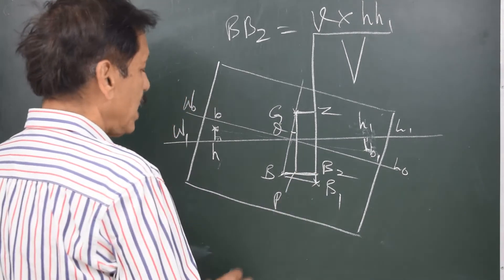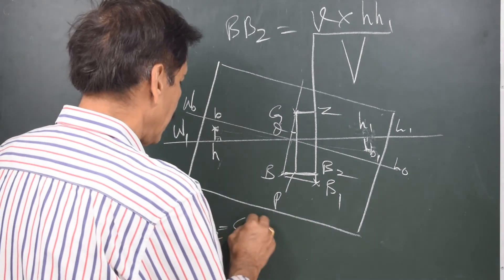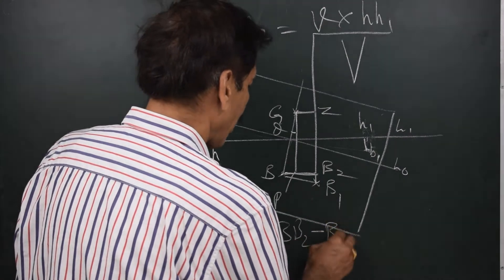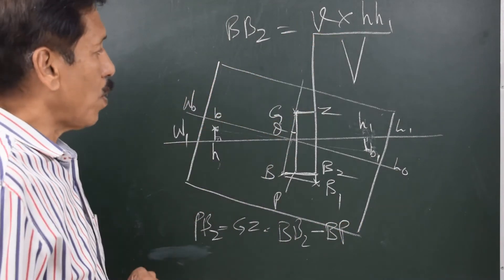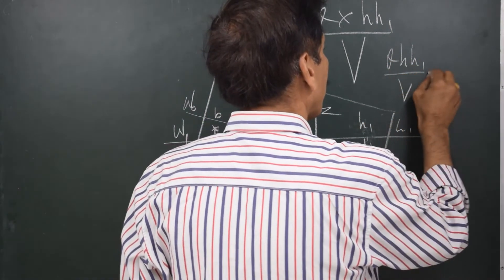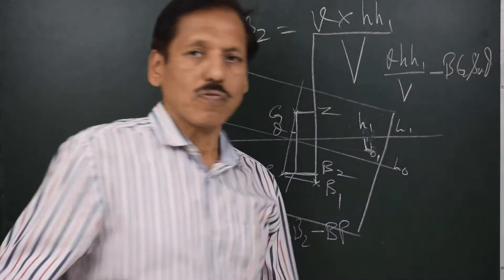PB2 being GZ, PB2 being GZ is equal to BB2 minus BP, BG sin theta, that is v HH1 upon capital V, v HH1 upon capital V minus BG sin theta. This is Atwood's formula.